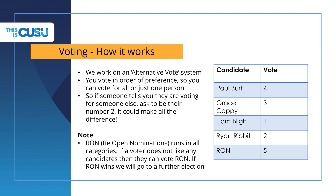Voting — perhaps the most important part of any election. This is a tiered voting system, so you vote in order of preference, where one equals first choice, two second choice, and so on. Getting second choice votes can sway the entire election. RON is not a person — RON stands for Reopen Nominations. It is an option if students do not like any of the candidates on offer and want the election rerun with a new set of candidates.